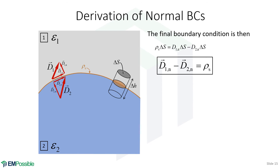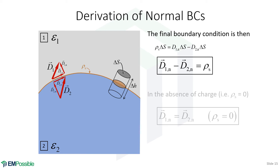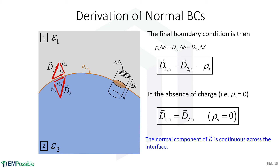The final boundary condition for the normal component of the electric flux is D1 normal minus D2 normal equals the surface charge density. In the absence of charge, which is most of the time, the surface charge term is zero, and the normal component of the electric flux is continuous across the interface: D1 normal equals D2 normal. That's the boundary condition we typically use, but remember it only holds when there's no surface charge.